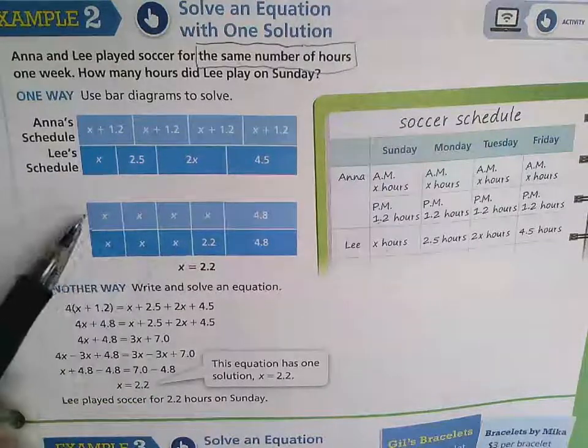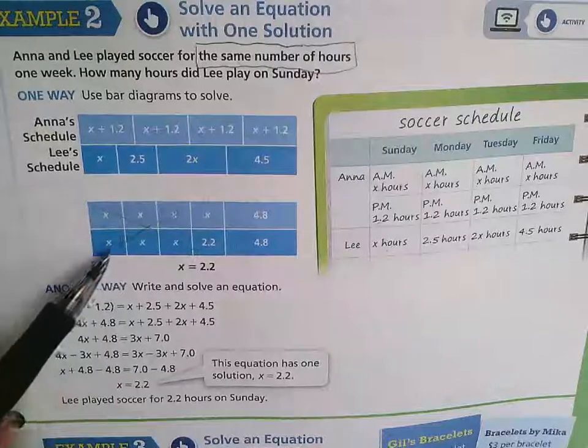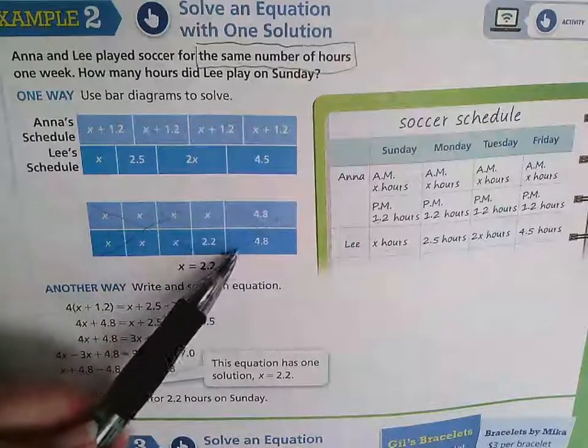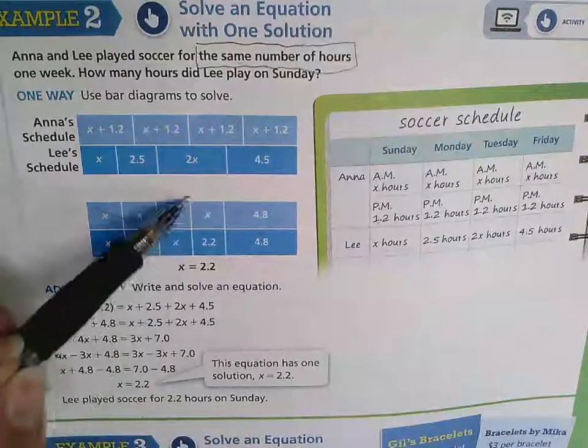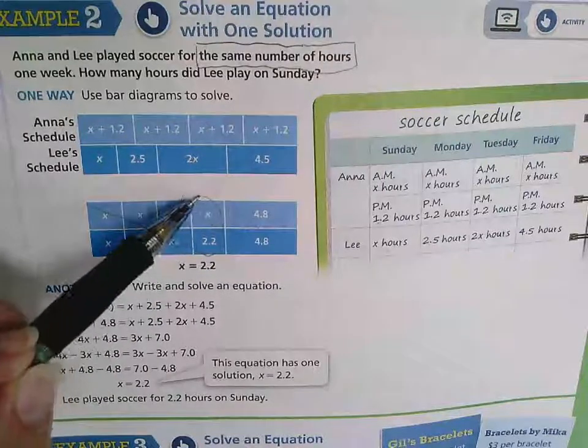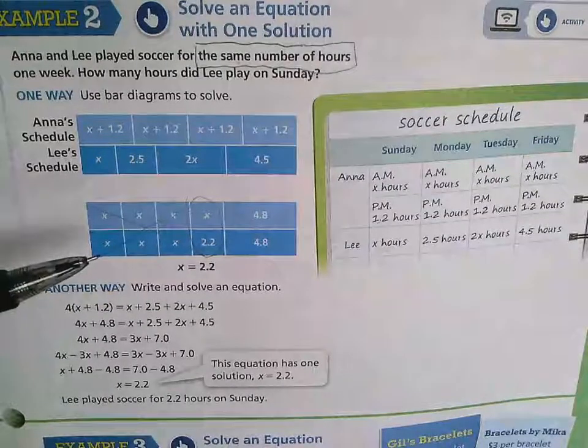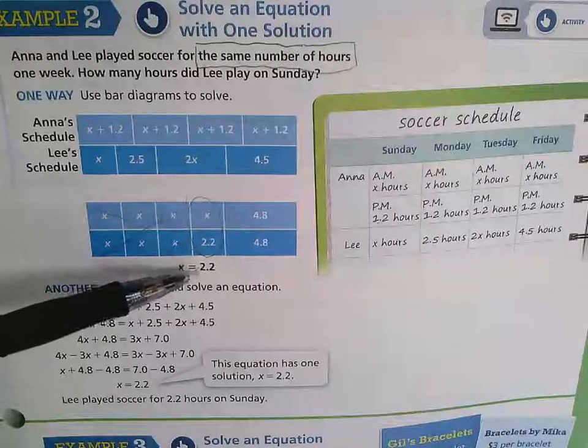So you'll notice that these would cancel each other out. And the only thing we have left is this value right here, that X is equal to 2.2 hours that Lee played.